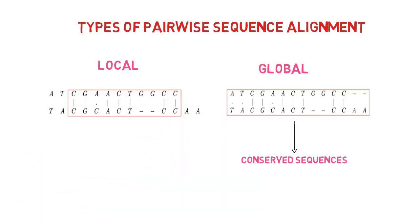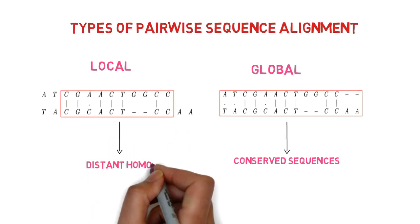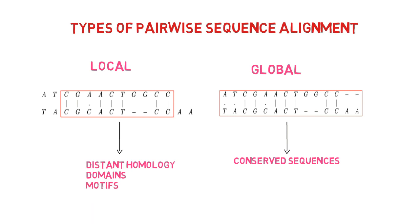By excluding less similar regions, local alignment identifies the area of the sequences with the greatest degree of similarity. It is used to identify distant homology and discover related domains and motifs.